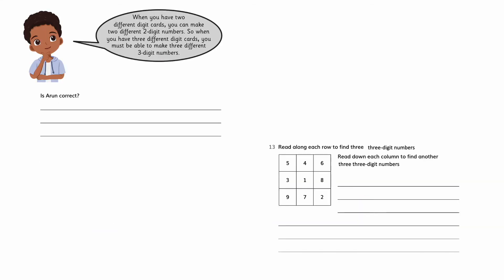When you have 2 different digit cards, you can make 2 different 2 digit numbers. So when you have 3 different digit cards, you must be able to make 3 different 3 digit numbers. Is Arun correct? How do you know? When you have 2 different cards, you are able to make 2 more. But when you have 3, you are able to make 6. So Arun is not correct. We can make 6 different cards.